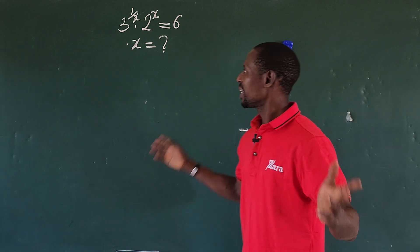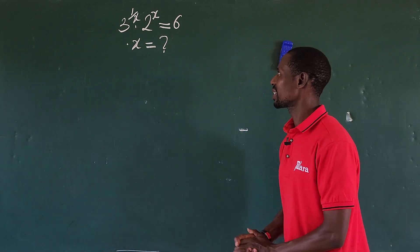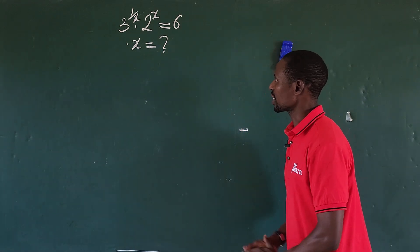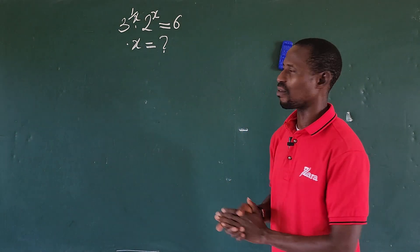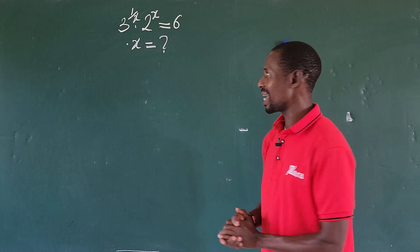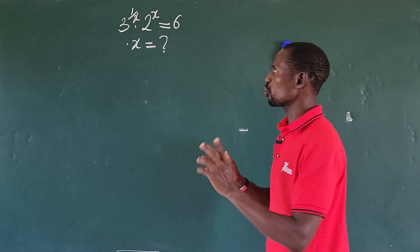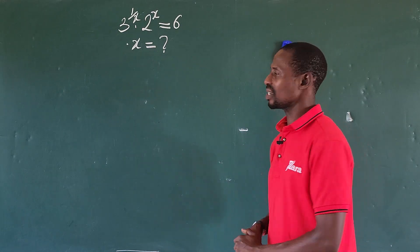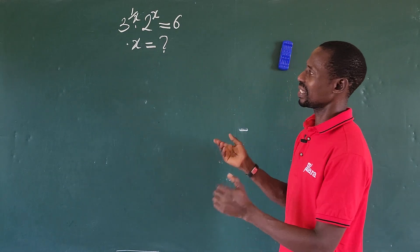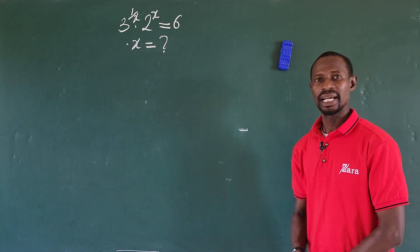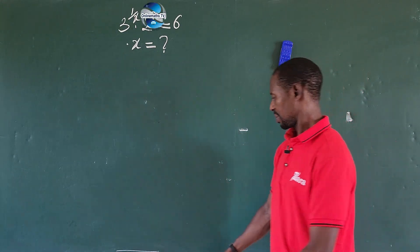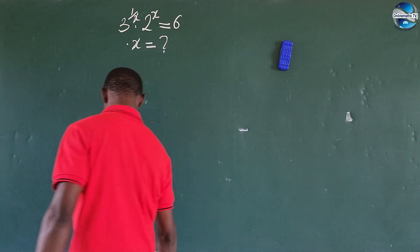Hello, good people. Here we have this question: 3 to the power of 1 over x, times 2 to the power of x, equals 6. What is the value of x? Let's solve this.